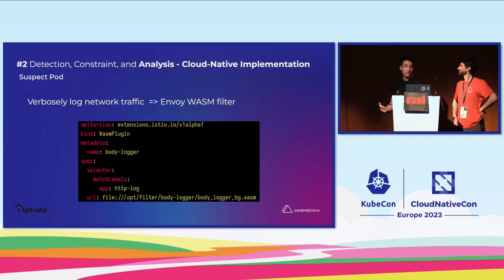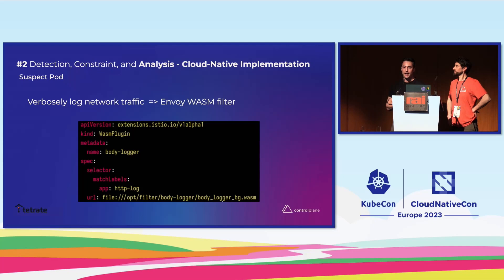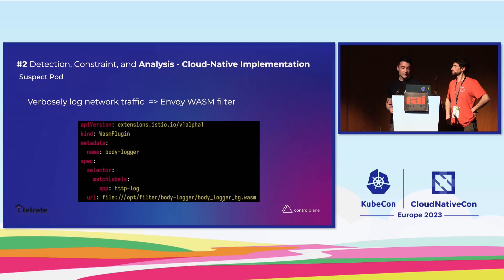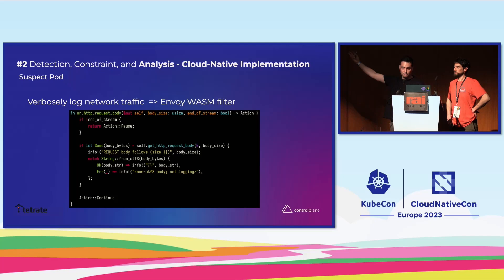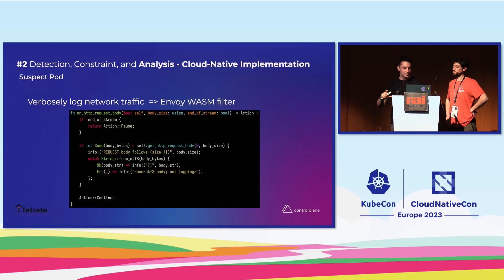For network traffic logging, Envoy doesn't natively want to log every header and request/response body — the only way to make it do so is to inject custom code via WASM plugins. Using the Envoy WasmPlugin resource, you point it to a WASM blob. This body-logger WASM plugin didn't exist, so it was written in Rust — memory safe, security-appropriate. It logs request bodies, response bodies, all request headers, and all response headers.